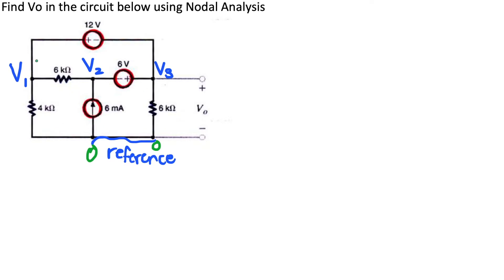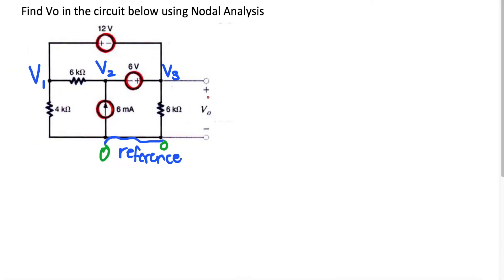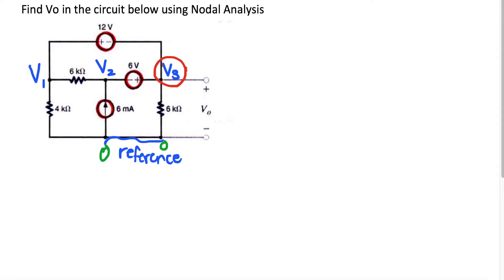If you want to find the current, it'll be V1 minus zero, V2 minus zero, and V3 minus zero because they're all connected by the reference node. We have our three nodes on top, our reference node on the bottom, and we need to find V0. To find V0, all we have to do is find V3.